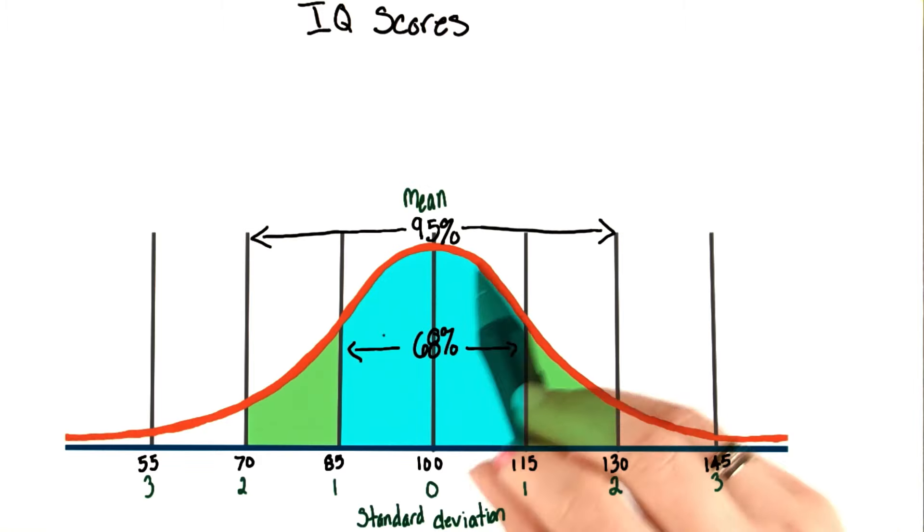95% of the population is within two standard deviations from the mean. So 95% of the people you know score between 70 and 130 on an IQ test.